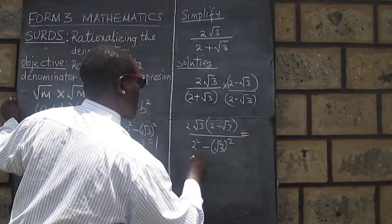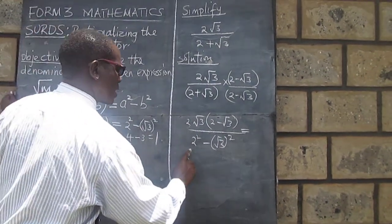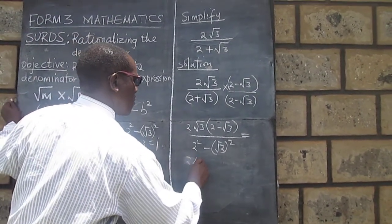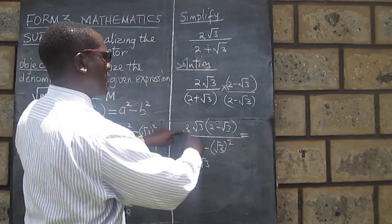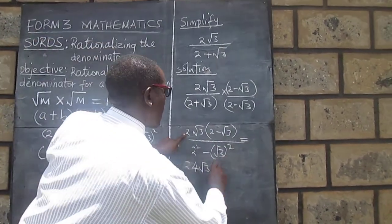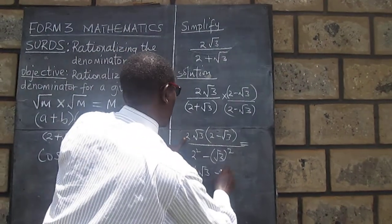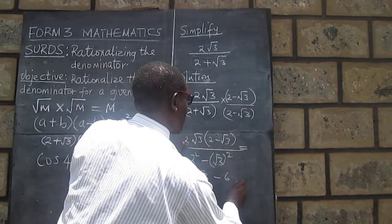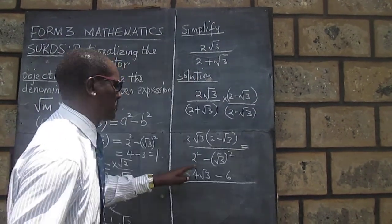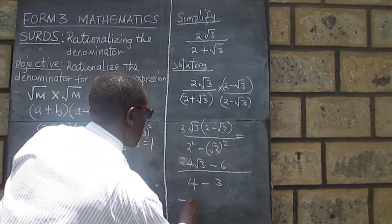Which therefore will give us 2 times 2√3, that becomes 4√3. And then we take 2√3 multiply by negative √3, and that becomes 2 times 3, that's 6 over, down here we get 4 minus 3.